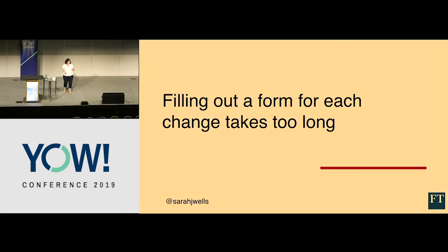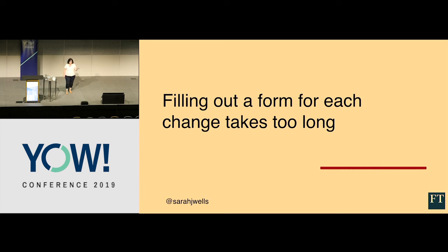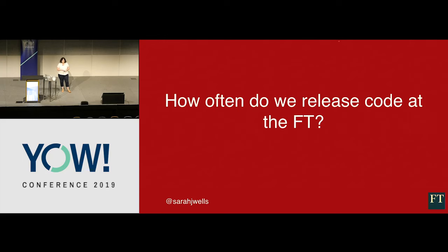The second process change: we used to fill out a form in Salesforce for every change request — normal changes required someone else to sign off, but of course they'd just trust their developer friend. It's process theater; the real way we review changes is a code review, a PR. When we built our first microservice system, we did more than 2,000 releases in a year, and I calculated it would have taken 47 working days just to fill out change request forms — that is not a good use of anyone's time. So now we have a change API: you call it as part of the build pipeline, we still know when a change has been made, but without the coordination overhead. So how often do we actually release? We know because I can graph the calls to the change API.